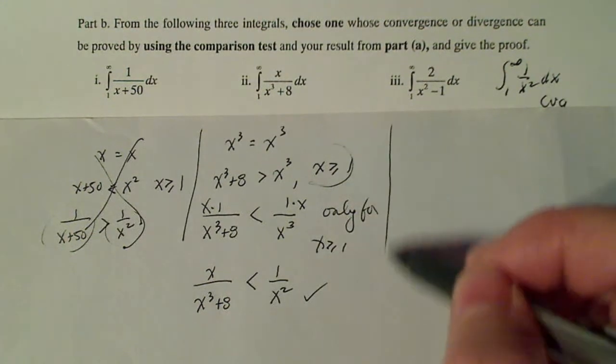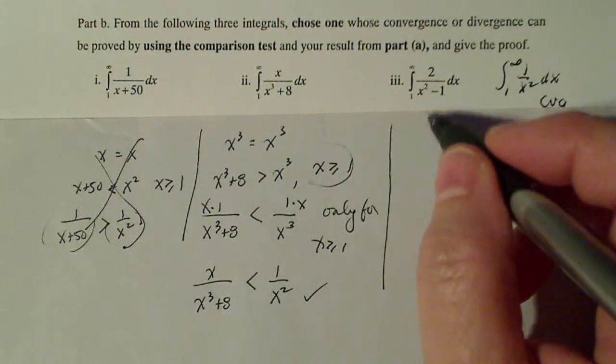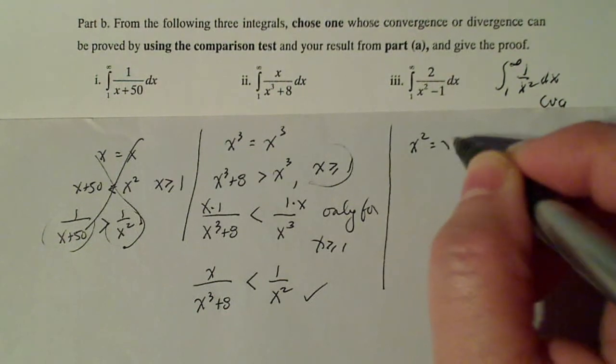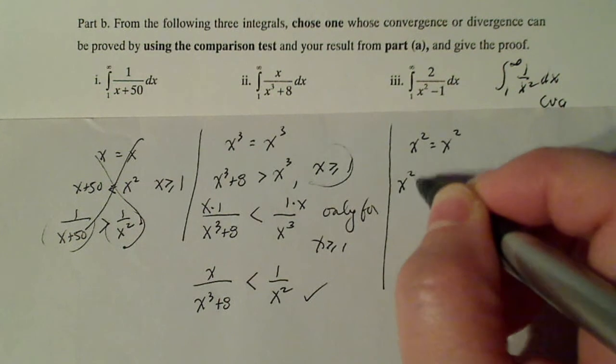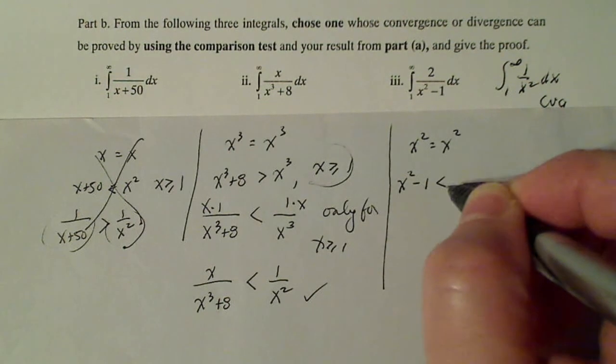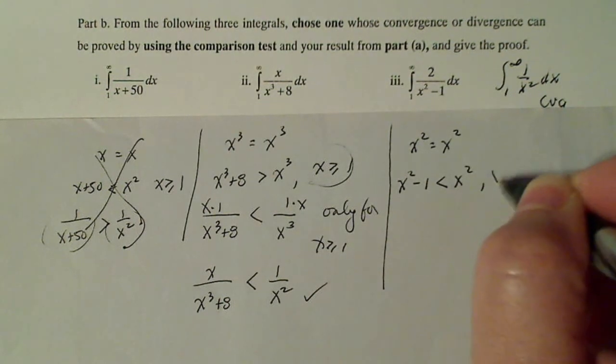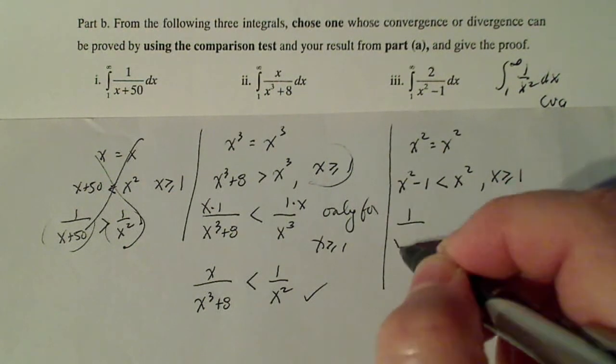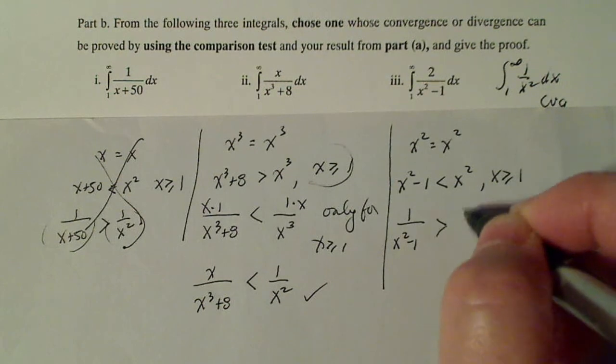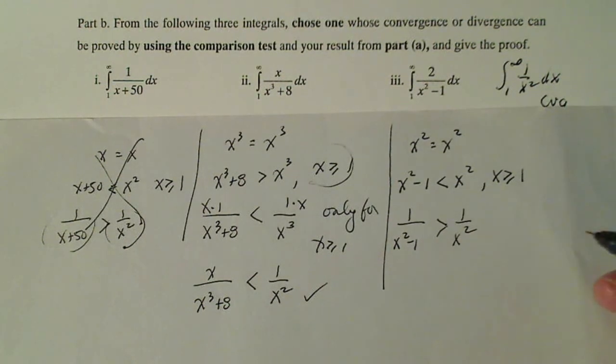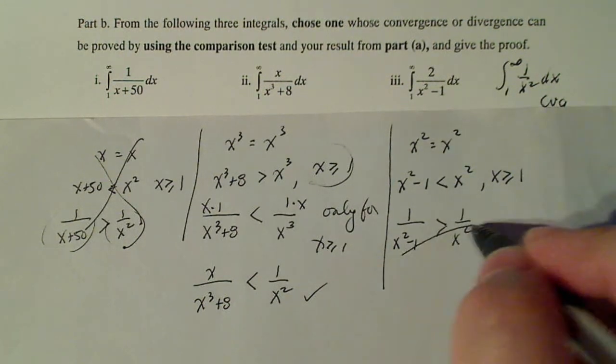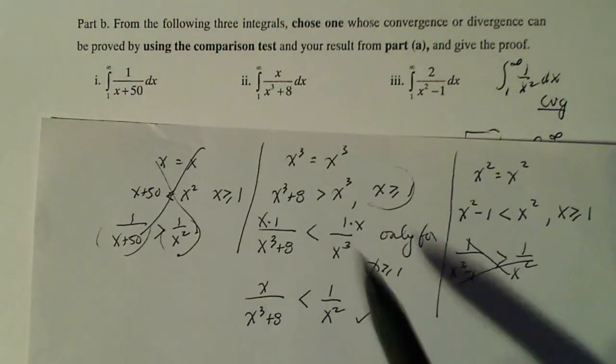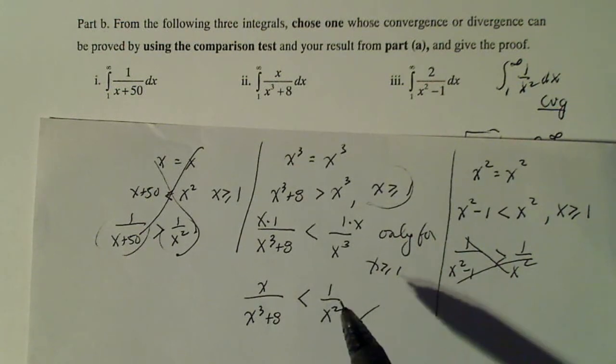But just in case, let's take a look at this last one. That's x squared, x squared equals x squared. And then if I subtract one from this side, that makes that less than this side, for x greater than or equal to one. So when I do my reciprocal, that's going to be greater than this guy over here. So that's not the case that I want. Remember, I said earlier, I want it to be less than. So it looks like the middle guy is the one I want to use.